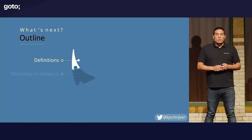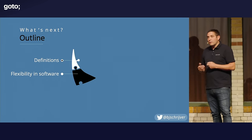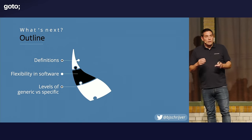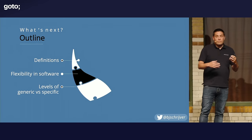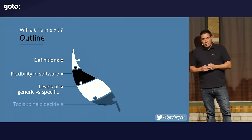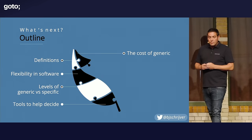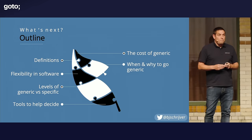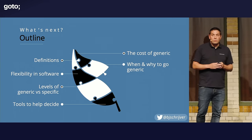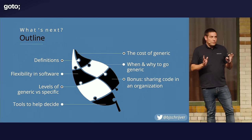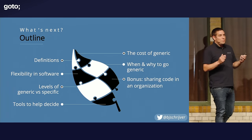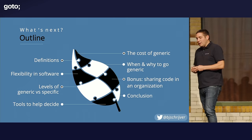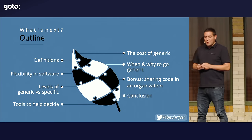For the next 45 minutes, we're going to look into some definitions. I'll tell a short story about flexibility in software. We're going to look at different levels where you can make choices of going generic or specific. I'll give you some tools to help decide, look at the cost of generic solutions, give some tips on when and why to go generic, and we may have time for a bonus topic. Every story needs an end, and this is no exception.